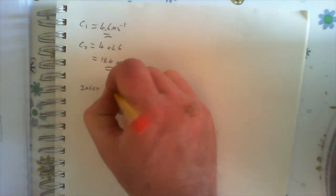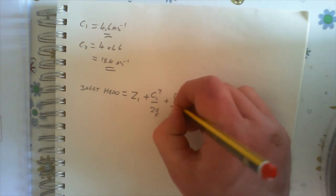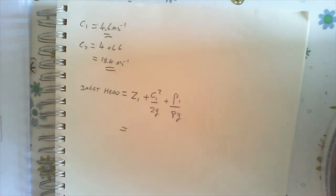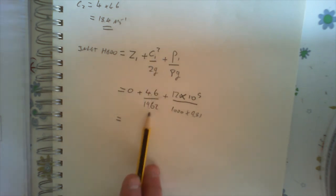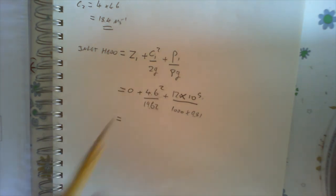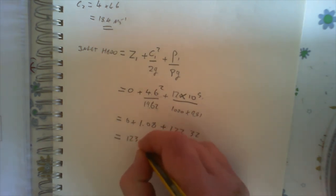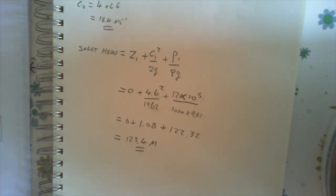If you wanted to find the inlet head, that equals Z1 + C1²/2G + P1/(ρg). Plugging in: Z1=0, C1=4.6 m/s, P1=12×10⁵ Pa, density=1000, g=9.81. Adding all that up it comes out to 123.4 meters. That's the culmination of all the force of the fluid coming to the inlet part of it before it goes down the cone.